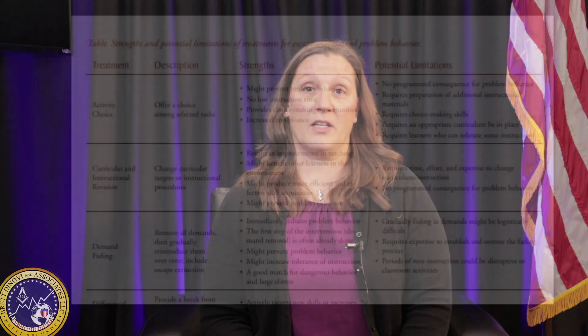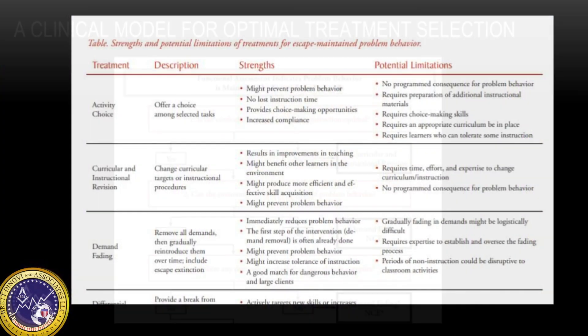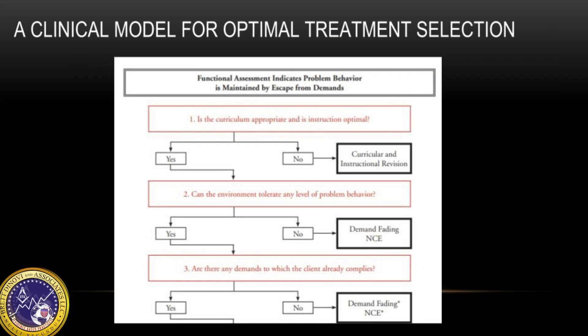It is important when designing function-based interventions that the practitioner takes into account the severity of the problem behavior, the repertoire of the individual, the tolerance of the behavior occurring, staffing ratios, and your level of expertise. This chart displays the strengths and limitations of each intervention. General questions will assist you in selecting treatment options for behavior that is negatively reinforced, and based on your responses, this tool will help guide you in selecting interventions. As a reminder, this is not an exhaustive list and these interventions can be used in combination.